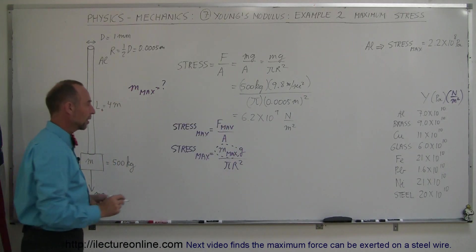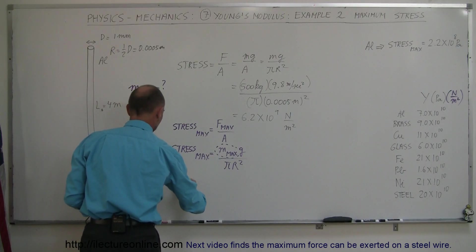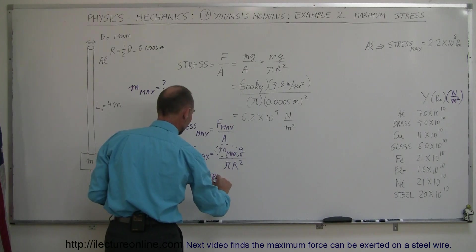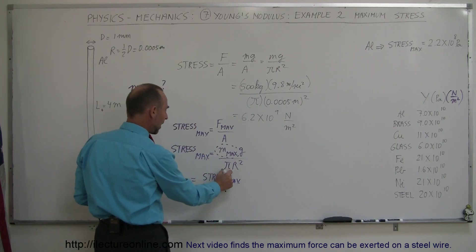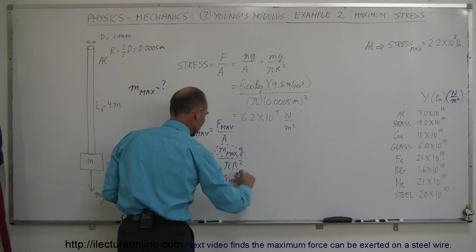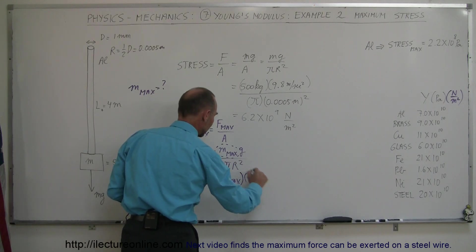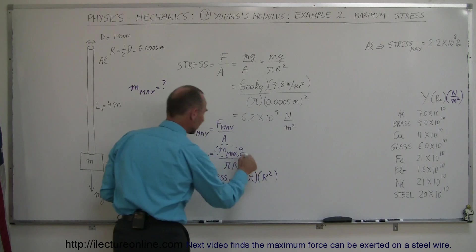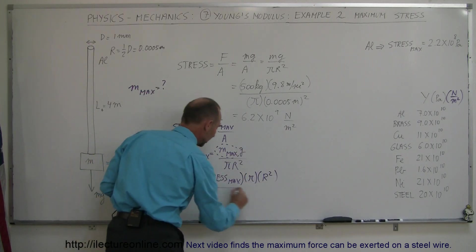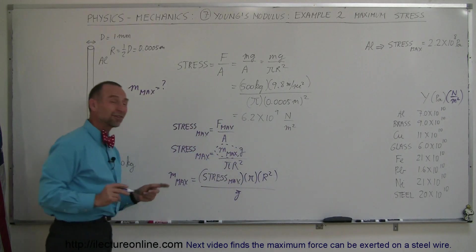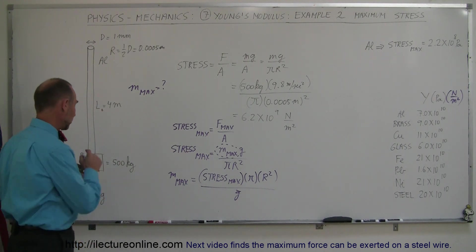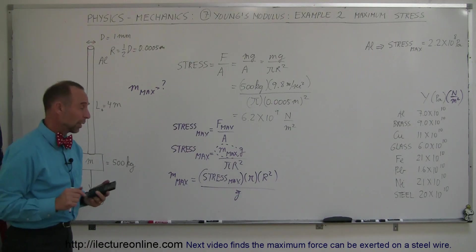So let's rearrange the equation. So we have m max is equal to, on the other side of the equation, the stress max. Notice that the pi will come up here and go to the numerator on the other side of the equation. The r squared will go to the other side, the numerator on the other side. And then the g will go to the denominator on the other side, like so. And that will give us the maximum mass, or the biggest object that we can hang from that wire before the wire will break.